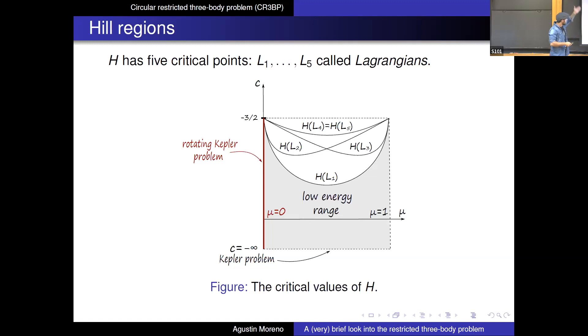At miracle zero, you have what's called the rotating Kepler problem. So it's just a two-body problem in a rotating frame. And then there's the fact that as you go to minus infinity in your energy, then you actually, after some regularization, you recover the honest Kepler problem, the two-body problem. So these are like the two integral limit cases.